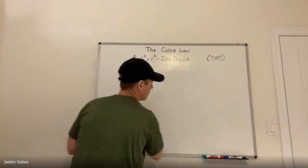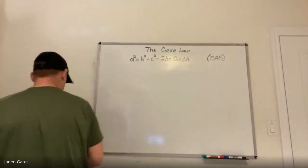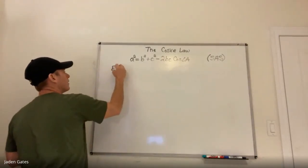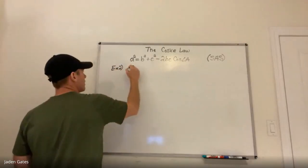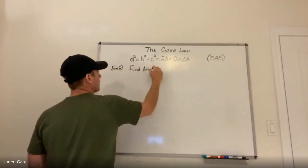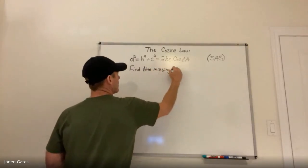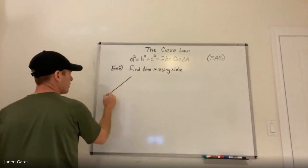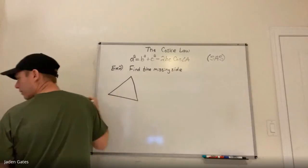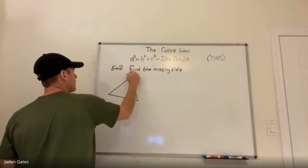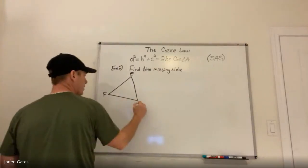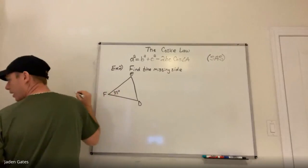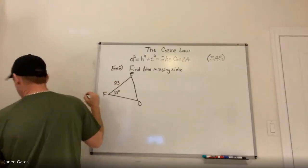Example two: find the missing side. Here's my triangle. I have vertices E, F, and D. I have a 35-degree angle, a side of 23, and a side of 15.